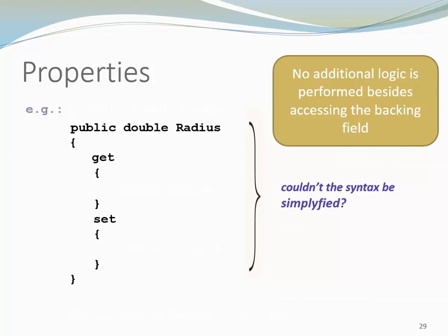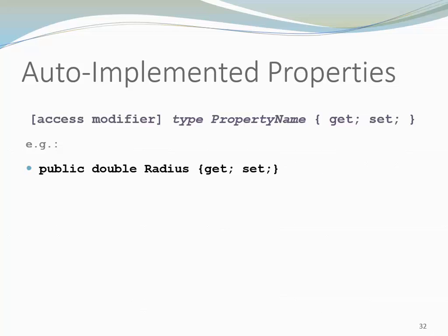Do we really need that many curly braces? Couldn't we just have a semicolon after the get and set? And the answer is yes, we can. So here you can see all we have left is the access modifier, the type, property name, and then in this case we specify that we want both get and set generated. We call this an auto-implemented property.